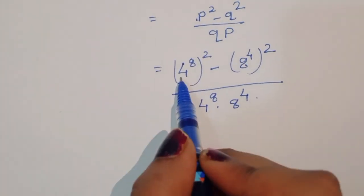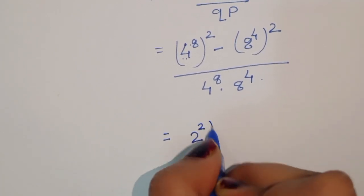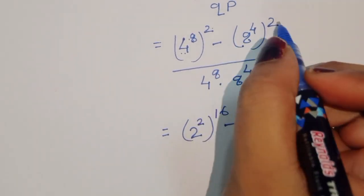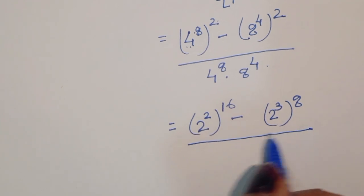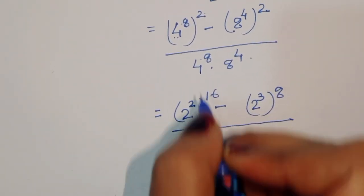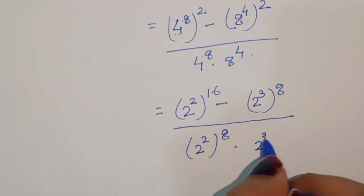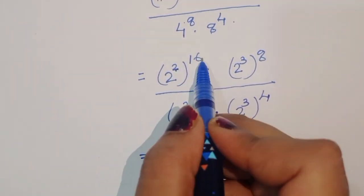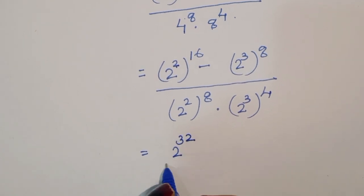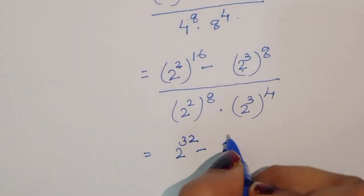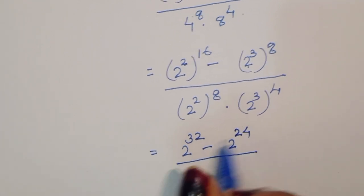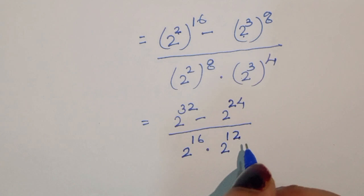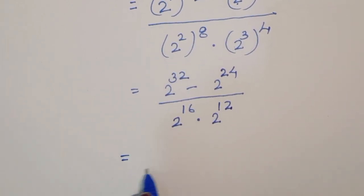Now we convert to base 2. We can write 4 as 2 squared, so 4 power 8 becomes 2 power 16. And 8 is 2 power 3, so 8 power 4 becomes 2 power 12. The numerator becomes 2 power 32 minus 2 power 24, and the denominator is 2 power 16 times 2 power 12.